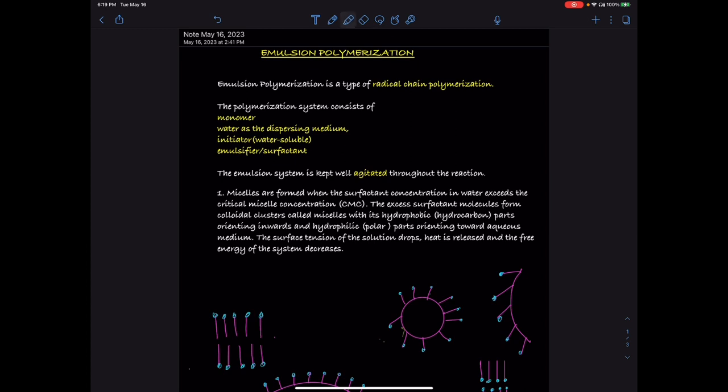The surfactant molecules come together and form something called micelles once they are above the critical micelle concentration. In the micelles, the surfactant molecules orient themselves such that their hydrophobic parts are away from the aqueous medium and their hydrophilic parts are toward the aqueous medium.